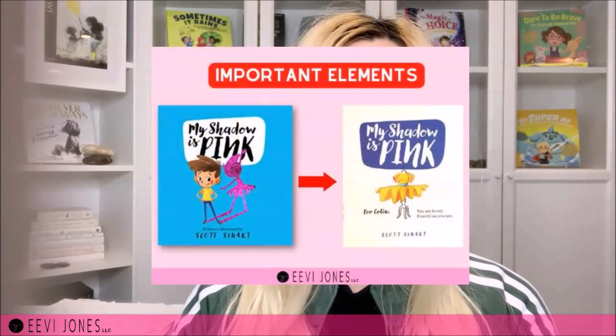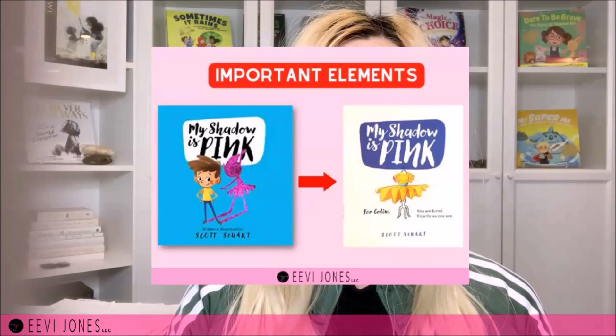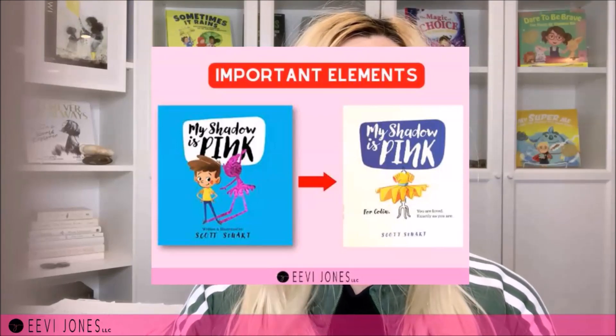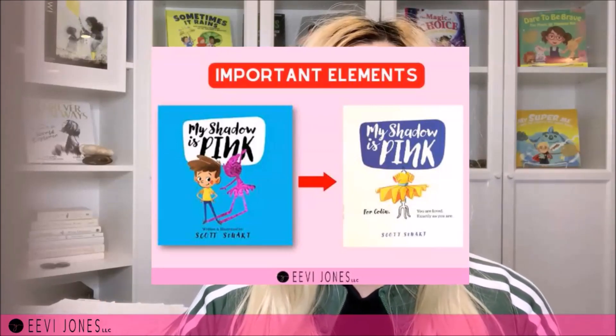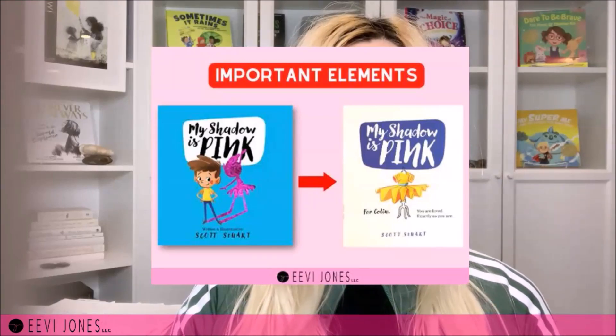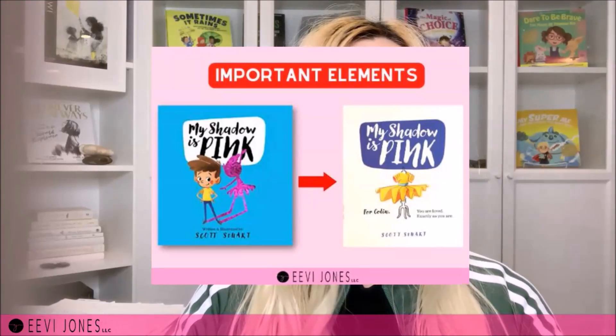The third layout idea is to show an important element of the story — usually not a character but an object. The perfect example is My Shadow is Pink by Scott Stewart. The title lettering is again the exact same as on the cover in terms of location, font, and size, with only the font color differing. Here the illustration is a dress — a very important element to the story. Showcasing a story element this way gives it immediate emphasis, and readers are already being introduced to it visually before the story begins.